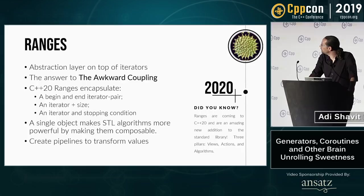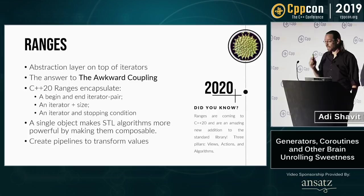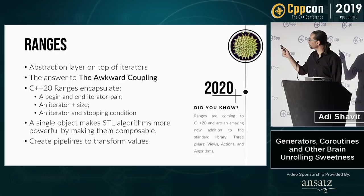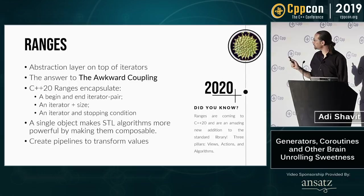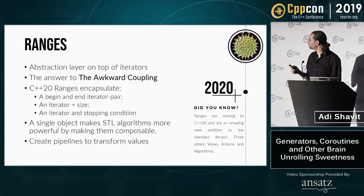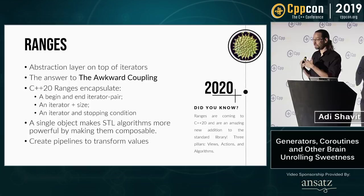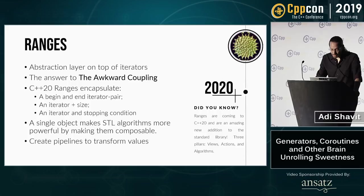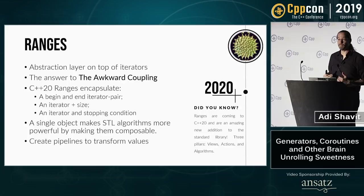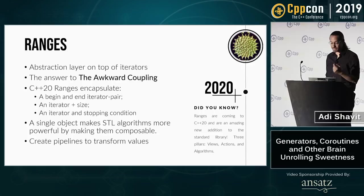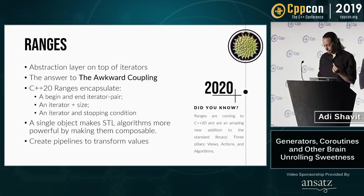C++20 is bringing us ranges, which are really the solution to this awkward coupling problem — an abstraction layer on top of iterators. A C++20 range encapsulates a begin iterator and an end iterator pair. It can also encapsulate an iterator and a size, or an iterator and a stopping condition. It's a single object we can pass to range-based STL algorithms, making them much more powerful and composable, and allowing us to create pipes. I want to contemplate how some ranges may actually be implemented by a user to interact with additional ranges, and since ranges are generalized iterators, implementing them still suffers from another difficulty that plagues iterator object implementations.